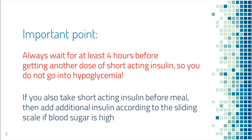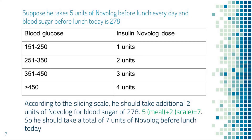If you also take short acting insulin before a meal and blood sugar is high before the meal, then add additional short acting insulin to the sliding scale. For example, this patient takes five units of Novolog before lunch every day and blood sugar before lunch today is 278. According to his sliding scale, 278 falls between 251 to 350, which corresponds to two units. So he should take an additional two units of Novolog to correct the high blood sugar. 2 plus 5 is 7, so he should take a total of seven units before lunch today to cover both the food and the high blood sugar.